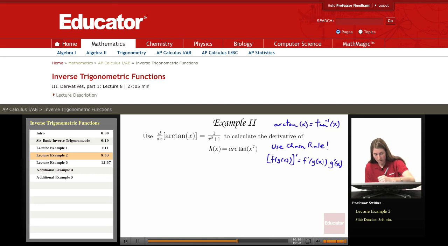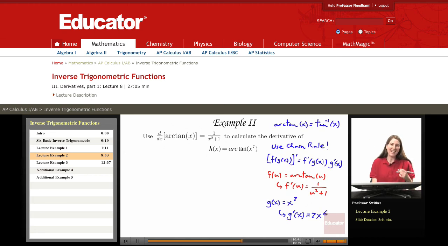The outer structure is f as a function of u equals arctangent of u, so f'(u) is 1 over u² plus 1. Our inner function is g(x) equals x to the 7th, so g'(x) is 7x to the 6th. Now we're all set to actually work on differentiating this function.